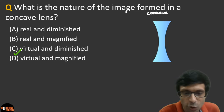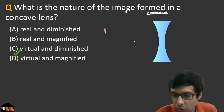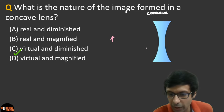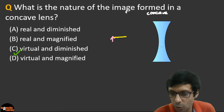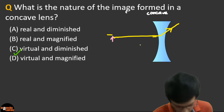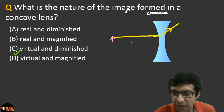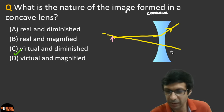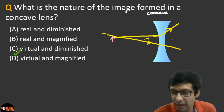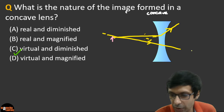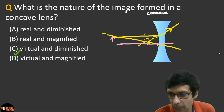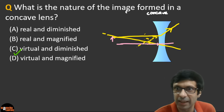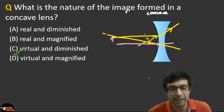If we trace back the rays, the image is going to be formed at this location. So if you draw the principal axis, your image is going to be formed somewhere here at this intersection. The correct answer is virtual and diminished image — option C.